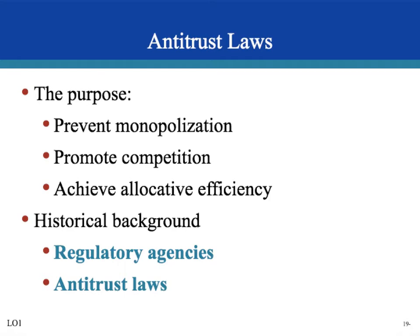These dominant firms were called trusts — business combinations that assign control to a single group. If there were only three or four companies in an industry, they would form a trust and make business decisions together. Back then there wasn't any regulation, so these dominant firms would acquire smaller firms using questionable business practices, which also led to extremely high consumer prices.